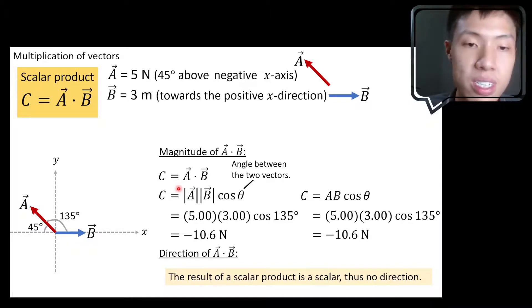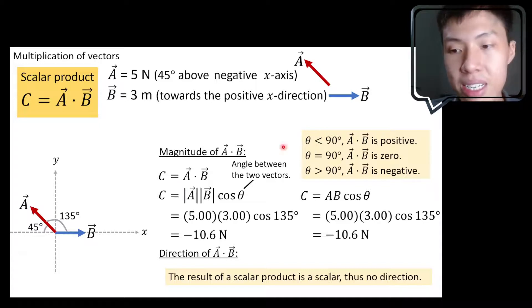And to summarize this up, I will say that if the angle here is less than 90 degree, then our A dot B will be positive. Scalar product will be a positive answer.